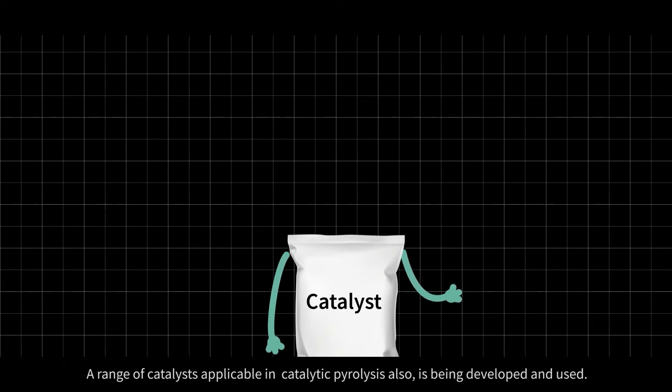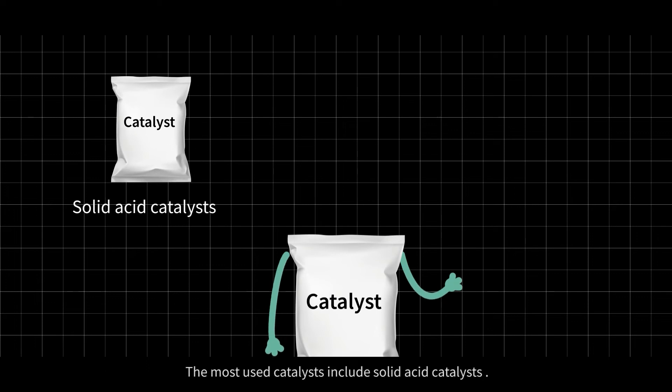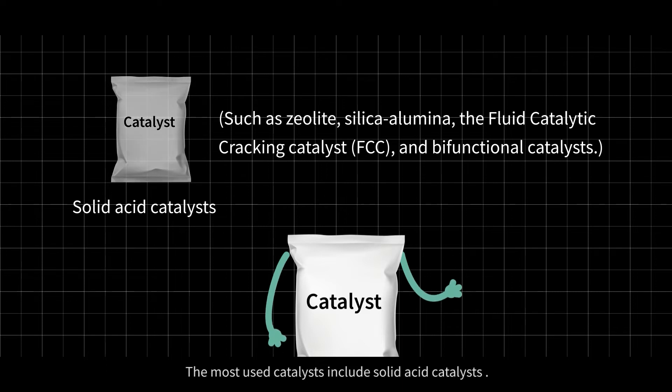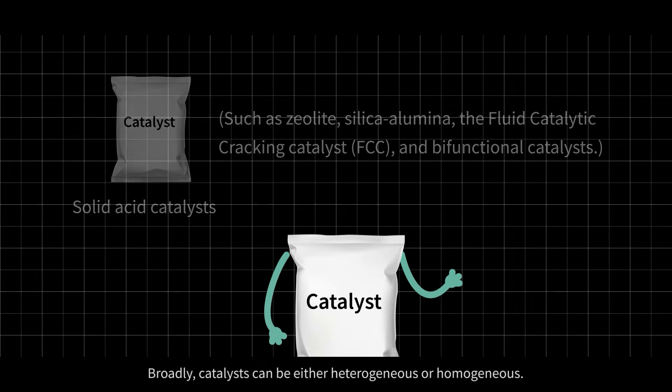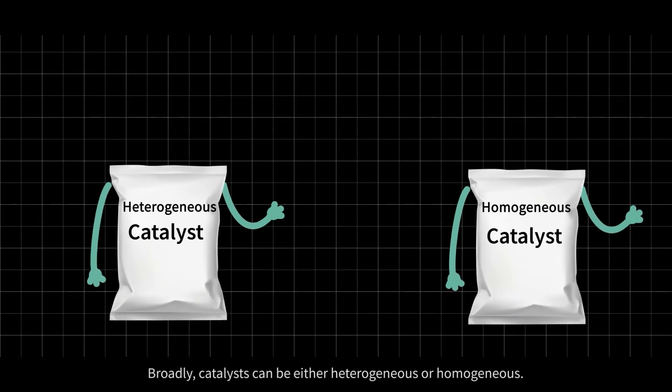A range of catalysts applicable in catalytic pyrolysis is being developed and used. The most used catalysts include solid acid catalysts such as zeolite, silicoalumina, the fluid-catalytic cracking catalyst, and bifunctional catalysts. Broadly, catalysts can be either heterogeneous or homogeneous.